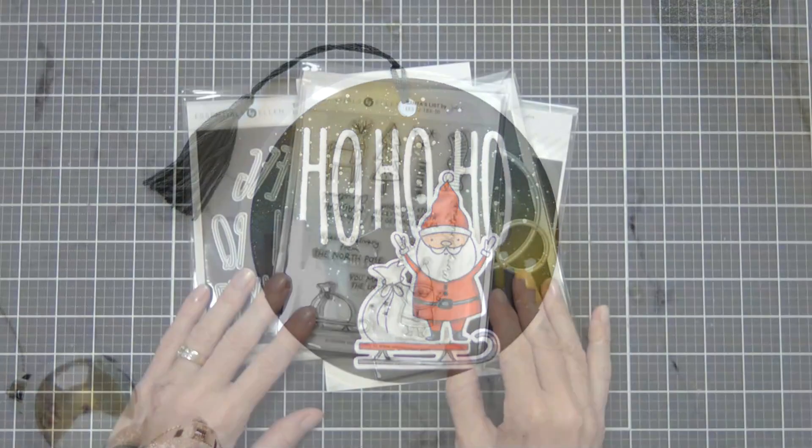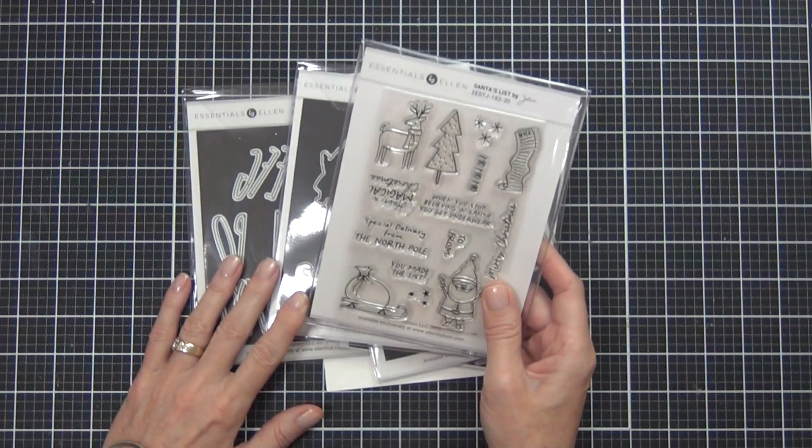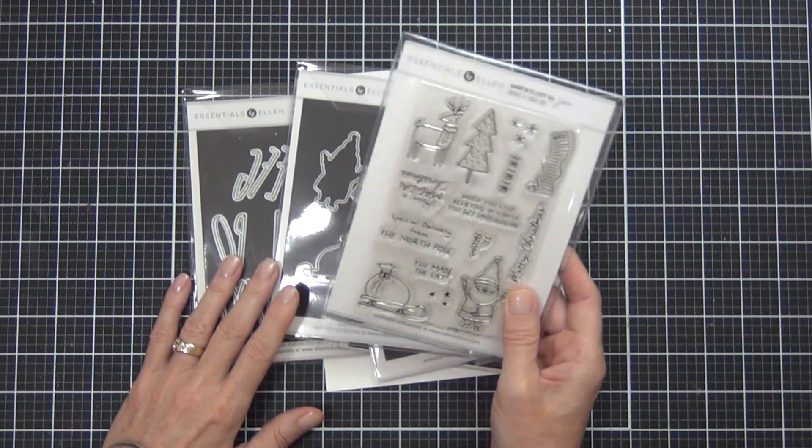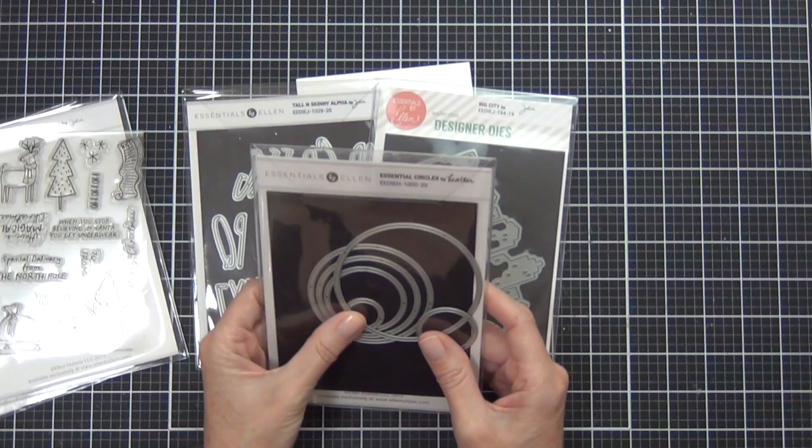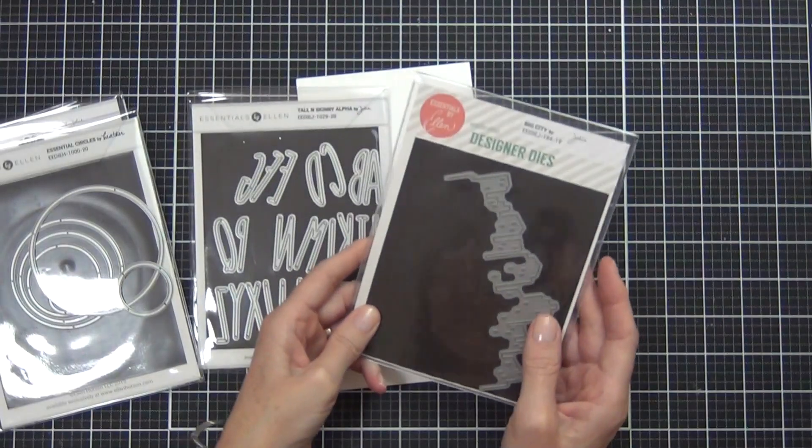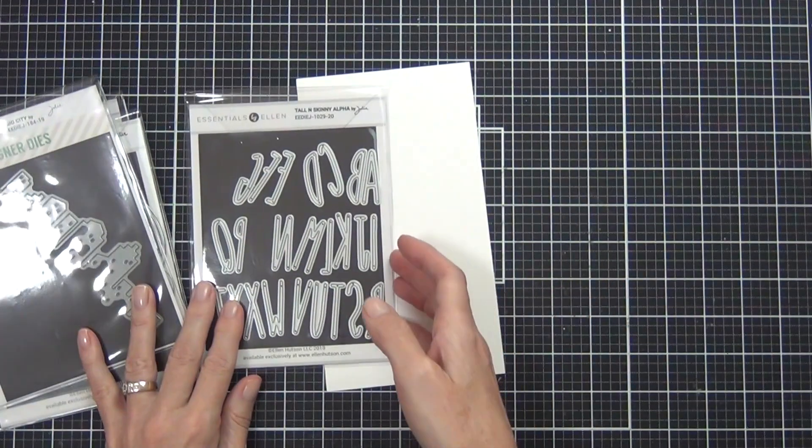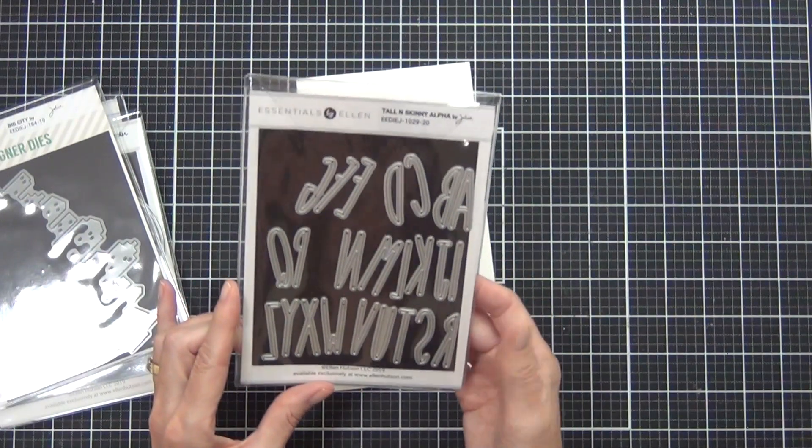I have Santa in my carols this year, so here's what I'm going to be using. This is the set called Santa's list and I've got the coordinating dies, some essential circles, and that's what's going to be making my tag. I have a big city and the sentiment I'm going to be creating my own bespoke sentiment using the tall and skinny alpha which I adore.